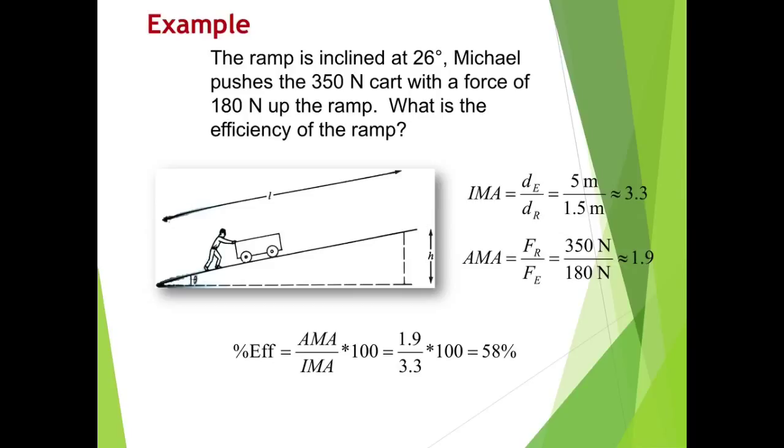I've plugged this into my calculator and I find that it's approximately 1.9. So my IMA is 3.3. My AMA is 1.9. Now remember IMA is ideal. It's the ideal mechanical advantage assuming that there is no friction, no outside forces. So we are expecting AMA to be lower.